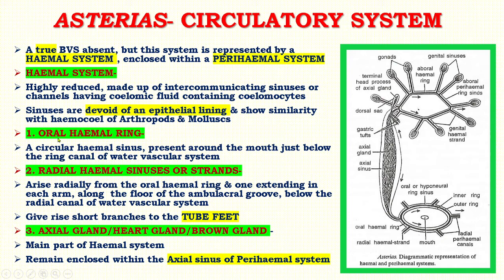The haemal system is divided into the following parts. Number one is the oral haemal ring — a circular haemal sinus present around the mouth, just below the ring canal of the water vascular system. Second are the radial haemal sinuses or strands, which arise radially from the oral haemal ring, one extending into each arm — five in number — along the floor of the ambulacral groove, below the radial canal of the water vascular system. They give rise to short branches to the tube feet, the locomotory organ.